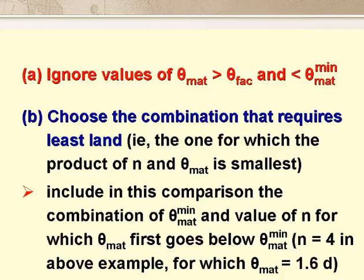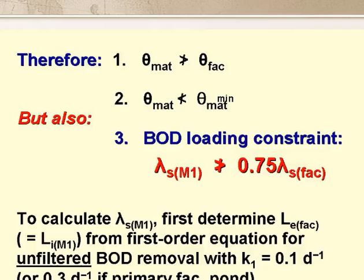How do we interpret these results? We would ignore values of theta mat greater than theta fac — there's no theoretical basis for this, just engineering judgement. We would also ignore values of theta mat less than theta mat min. We then choose the combination of N and theta mat that requires the least land — the combination for which the product N times theta mat is a minimum — including the combination of theta mat min and the value of N for which theta mat first goes below theta mat min. Thus theta mat can't be greater than theta fac, nor less than theta mat min.